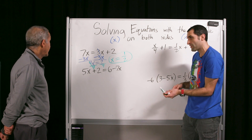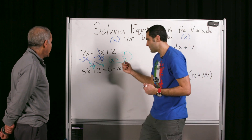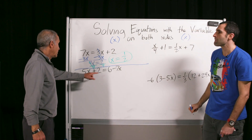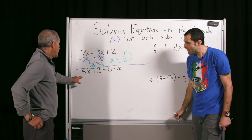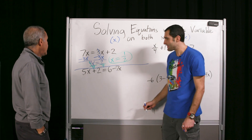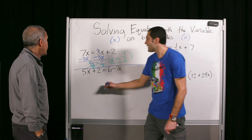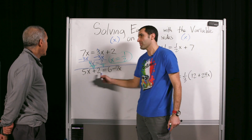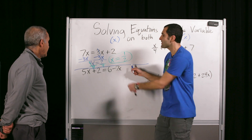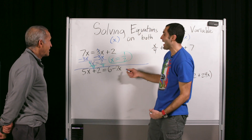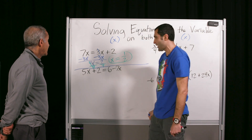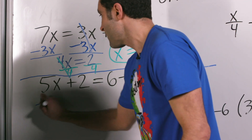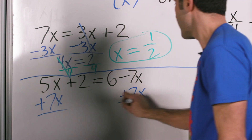What would you like to do to both sides first? We could add 7x on either side. Could we have subtracted 5x on both sides as well? Sure. But it's nice to bring x to the left — it keeps it positive, and that's also a win. So let's do that, as long as x ends up by itself.